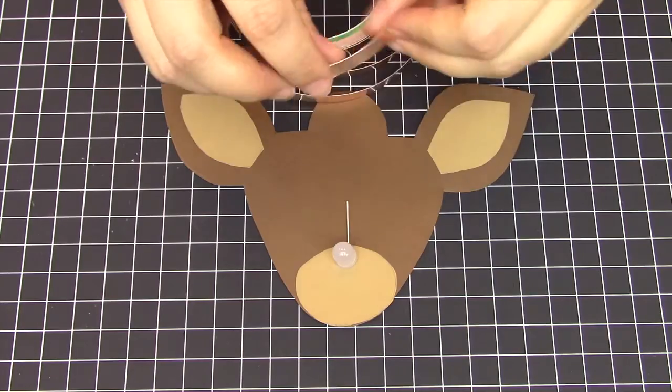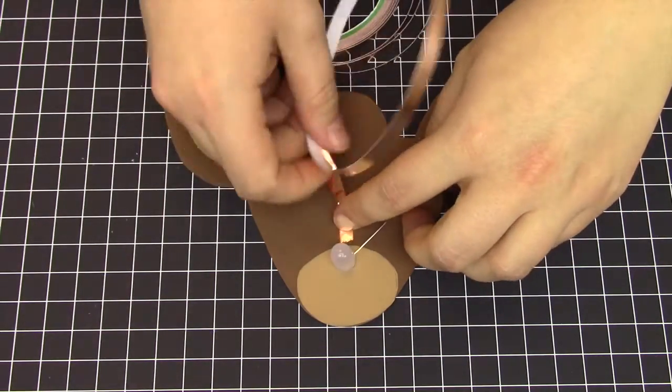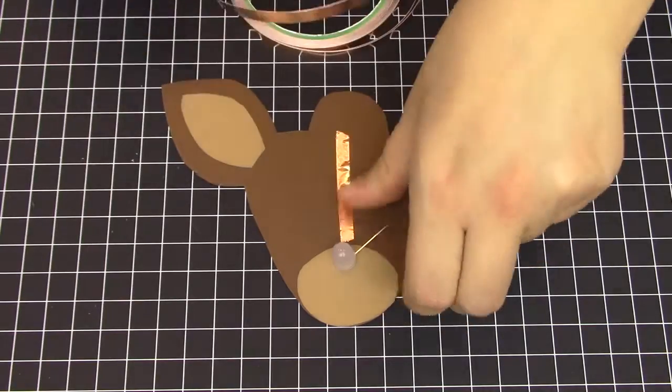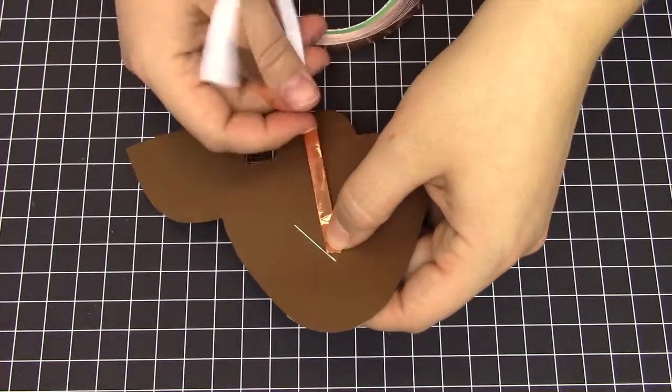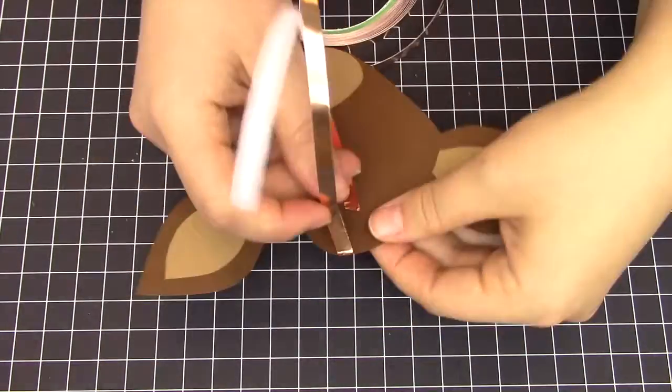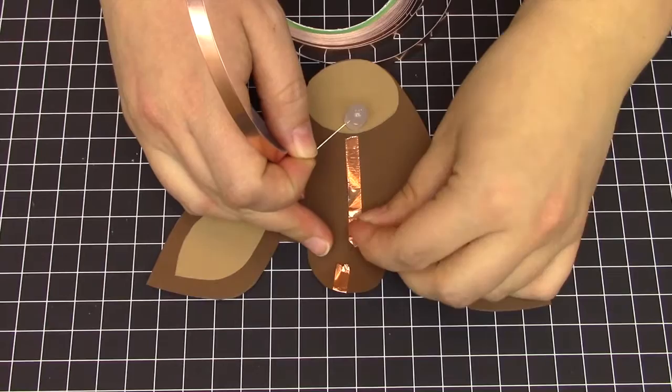Next, we will add our copper tape. Run a strip of conductive copper tape from the LED up towards the battery tab at the top. Flip the reindeer over and run one strip from the back side all the way onto the front, making sure that these two pieces of tape don't touch.